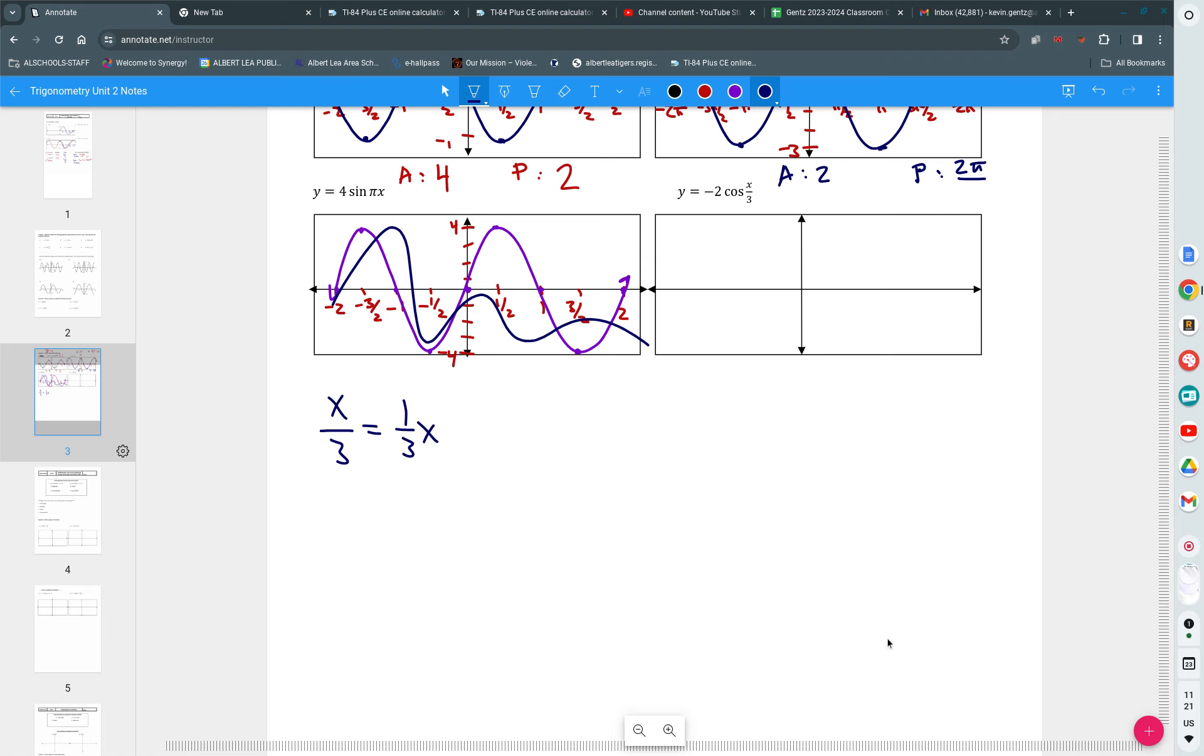Dividing by 3 is the same as multiplying by 1 third. Those mean the same thing. So, when you see x over 3, it's going to be 2 pi divided by 1 third. How do I divide by 1 third? So, dividing by 1 third, I multiply by the reciprocal, which is 3. So, I end up with 2 pi times 3, which is 6 pi. So, the period is 6 pi.